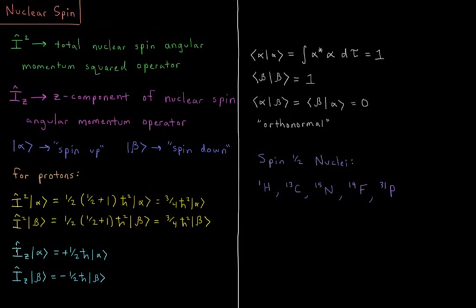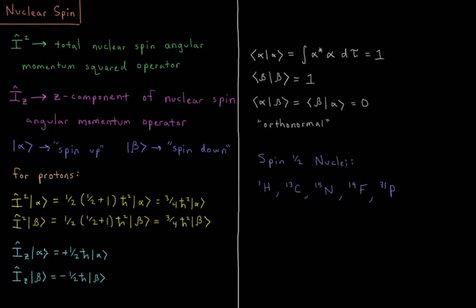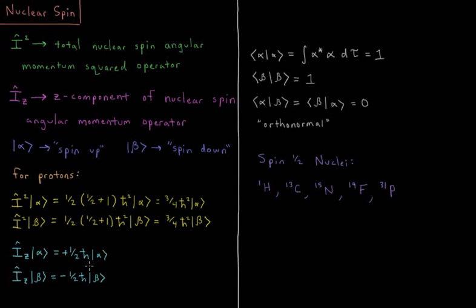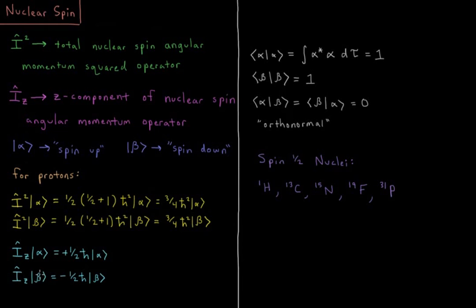Then we go to the Iz operator, where the direction does matter, so the spin of a nucleus can either be up by one-half or down by one-half. So Iz on alpha gives us plus one-half h-bar alpha, and Iz acting on beta, or spin-down proton, gives us minus one-half h-bar beta.